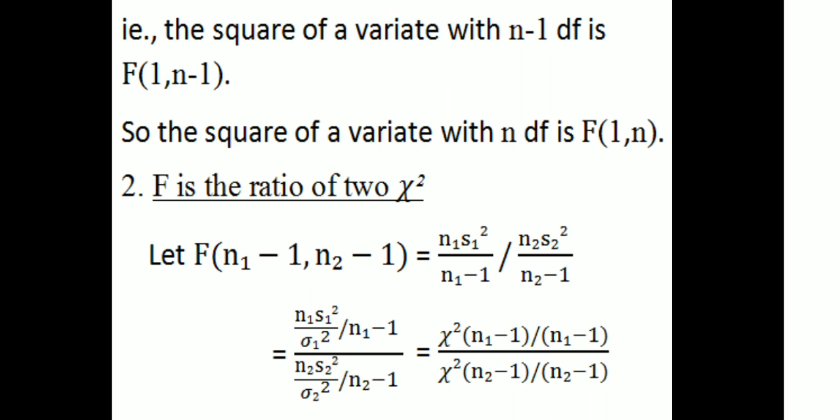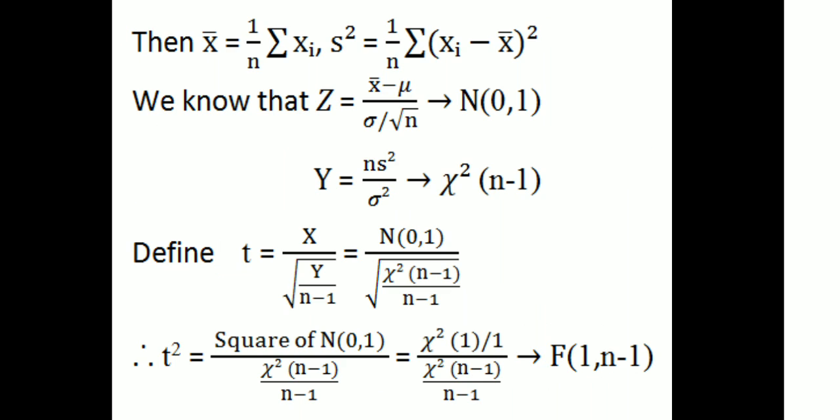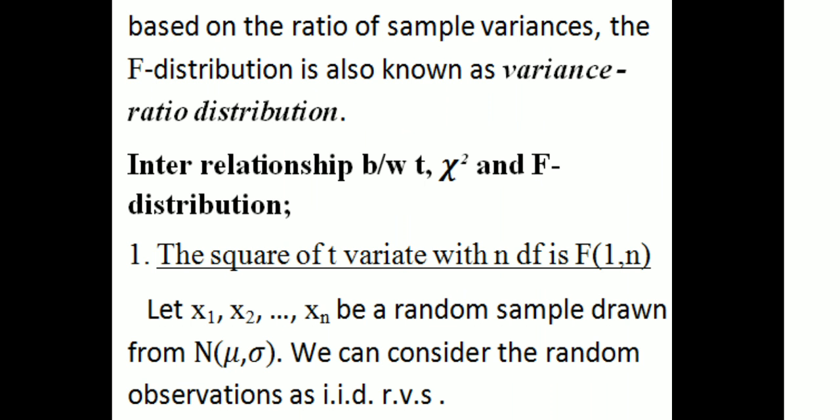Second interrelationship: F is the ratio of two chi-square distributions. F(n₁-1, n₂-1) = (n₁s₁²/(n₁-1)) / (n₂s₂²/(n₂-1)) = (n₁s₁²/σ₁²)/(n₁-1) ÷ (n₂s₂²/σ₂²)/(n₂-1) = chi-square(n₁-1)/(n₁-1) ÷ chi-square(n₂-1)/(n₂-1). The interrelationship between t, chi-square and F distributions is important.